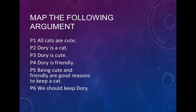Given these premises, how are they structured? There's more than one layer here. P1 and P2 together should lead to P3. So P1 and P2 are in a dependent relationship leading to P3. We'd represent it like that. Use the puzzle piece method: all cats are cute, Dory is a cat — the common part 'cat' falls out, therefore we get Dory is cute.